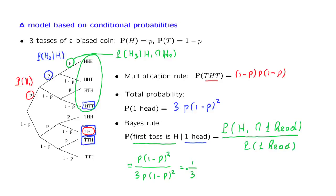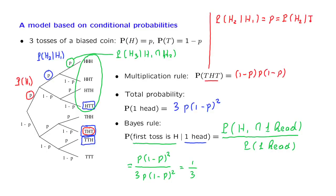This example is special in the following respect. The conditional probability of h2 — heads in the second toss — given that the first toss was heads, equals p. And the same is true for the conditional probability of heads in the second toss given that the first toss was tails. In other words, our beliefs about what may happen in the second toss remain the same — probability p of heads — no matter what happened in the first toss.